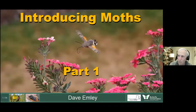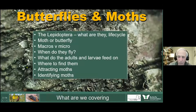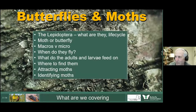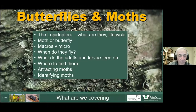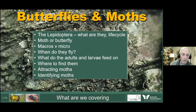Tonight's talk is designed in two parts. One is to talk about what the Lepidoptera — the butterflies and moths — are: how do you tell a butterfly from a moth, what are macros and micros, when do moths fly, what do the adults and larvae feed on, where do you find them, how do you attract them, and lastly how you identify them. Next week we'll talk about how a nocturnal moth survives during the day and avoids being predated, all the different camouflage techniques it uses, and the current situation with moths.